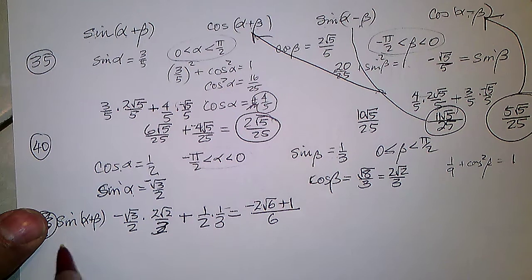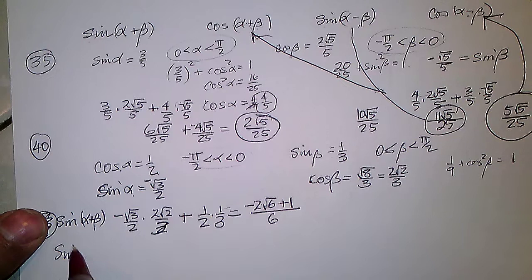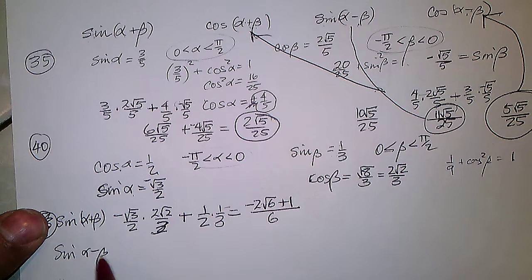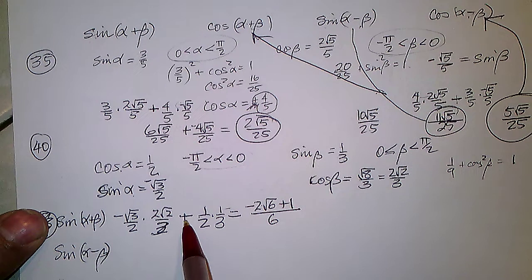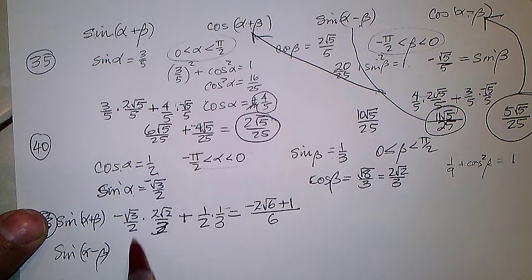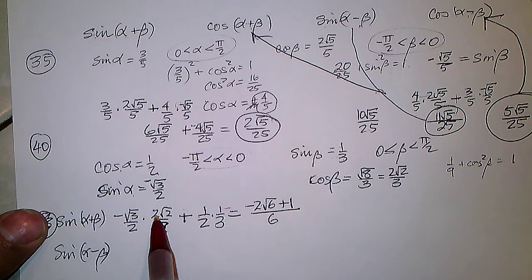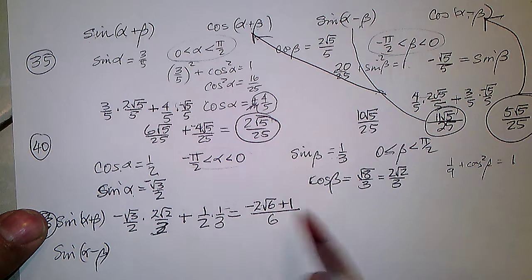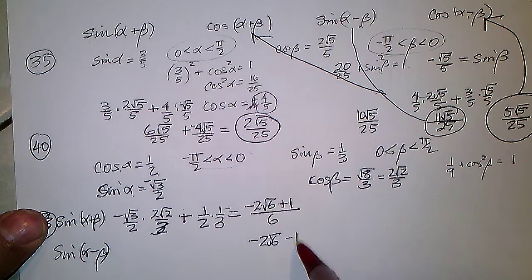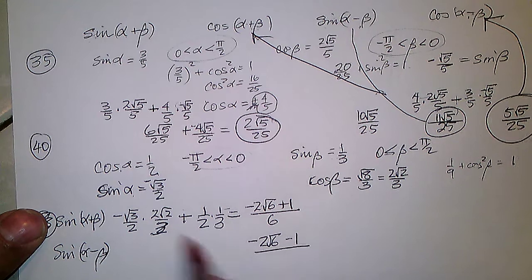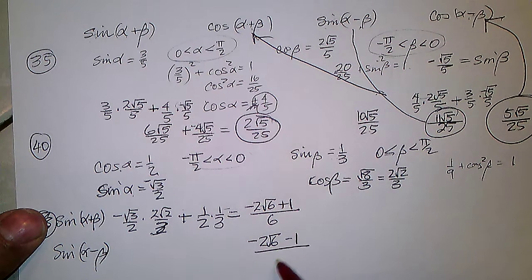Sine of alpha minus beta changes the sign on the second term, giving negative 2√6 minus 1 over 6.